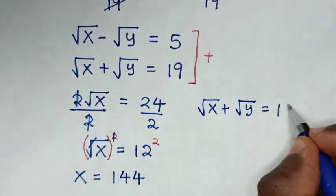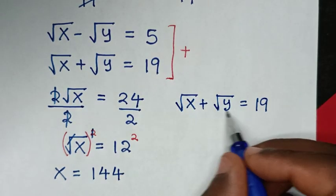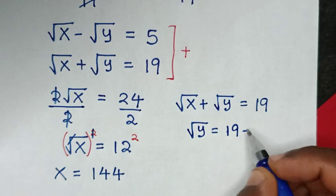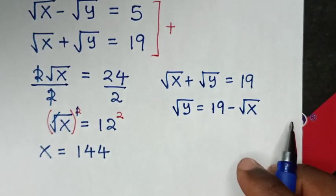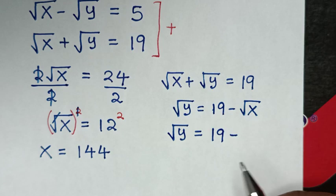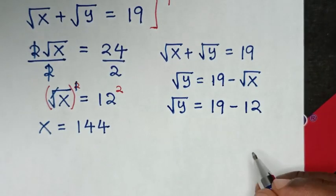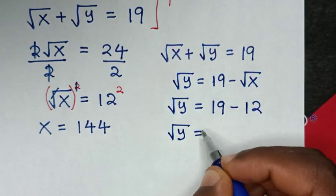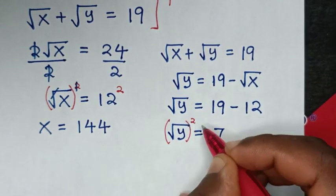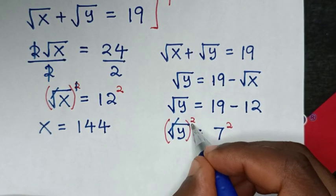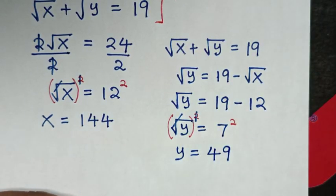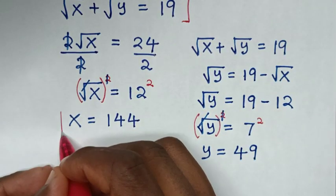To find the value of y, we use square root of x plus square root of y equals 19. Taking square root of x to the right side, square root of y equals 19 minus square root of x, which is 19 minus 12, so square root of y equals 7. Squaring both sides, the square root cancels, giving y equals 7 squared, which is 49. Therefore the value of x is 144.